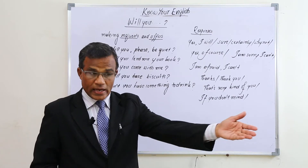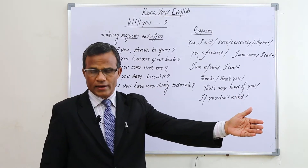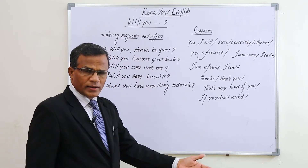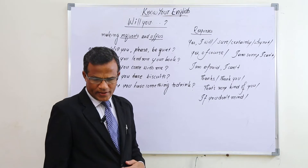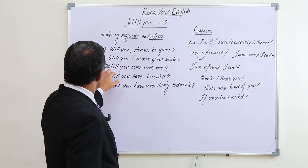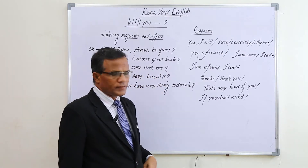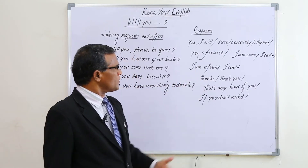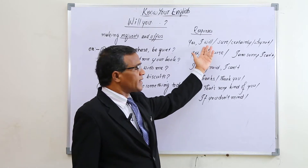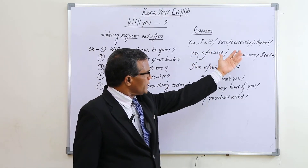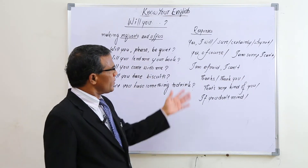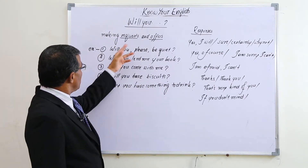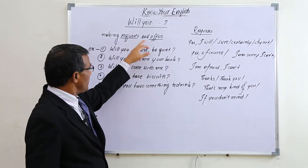When you hand over anything to another person, we use 'Here it is' or 'Here you are.' If the item is a bit further away, we say 'Here they are' or 'There they are.' Another example: 'Will you come with me?' — politely asking a person to come with us. The response can be 'Yes, of course,' 'Yes, I will,' or 'Why not?'